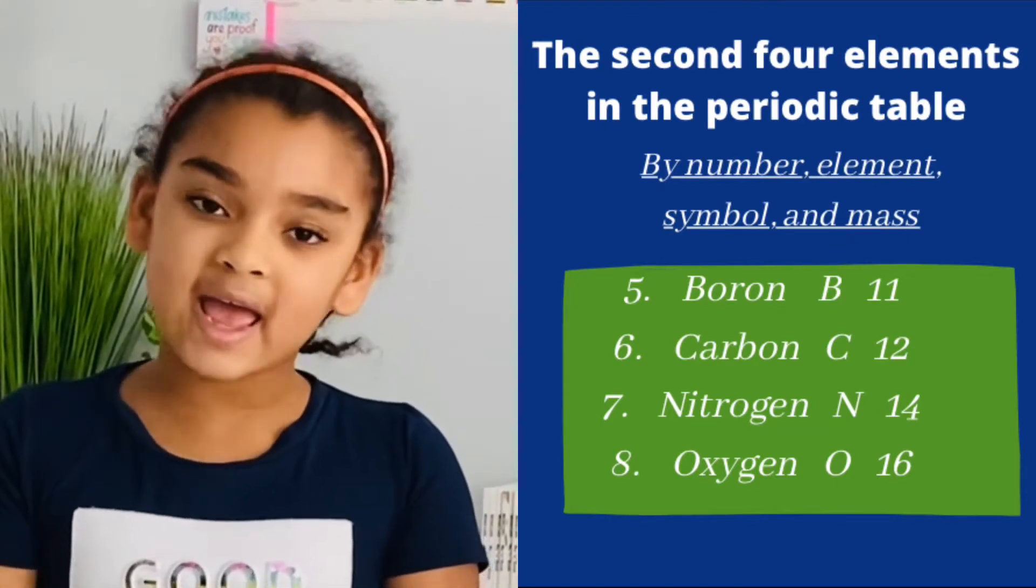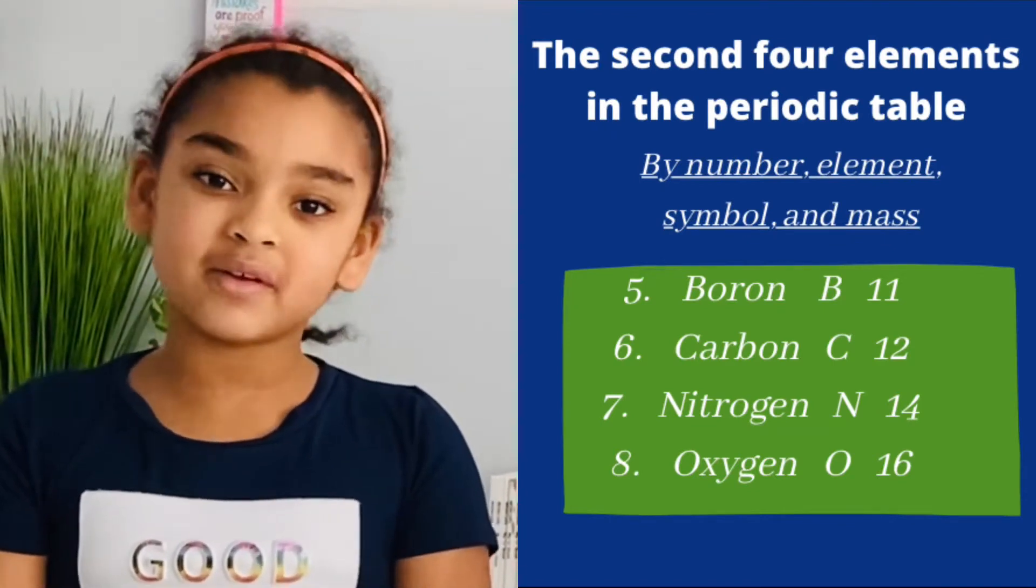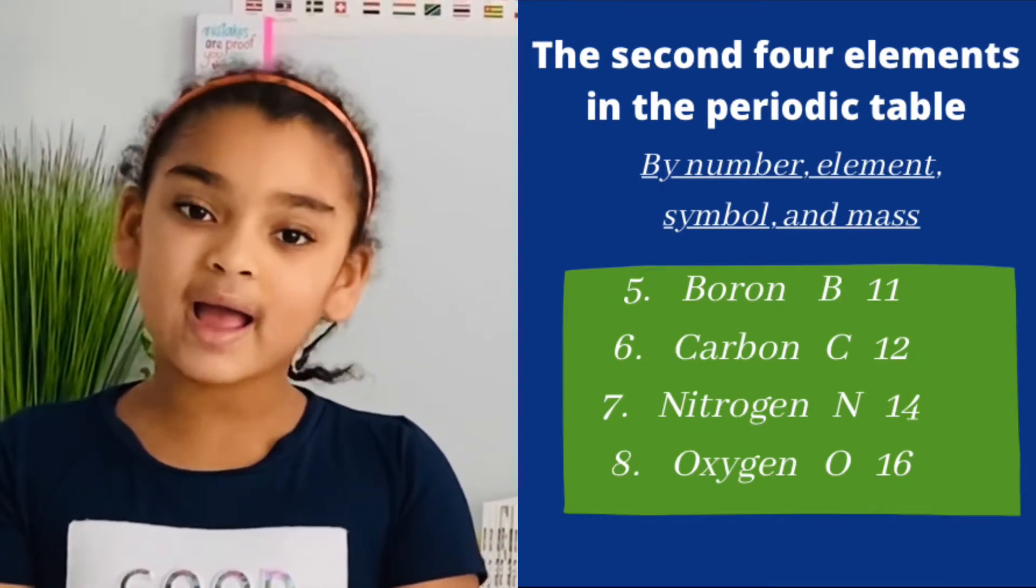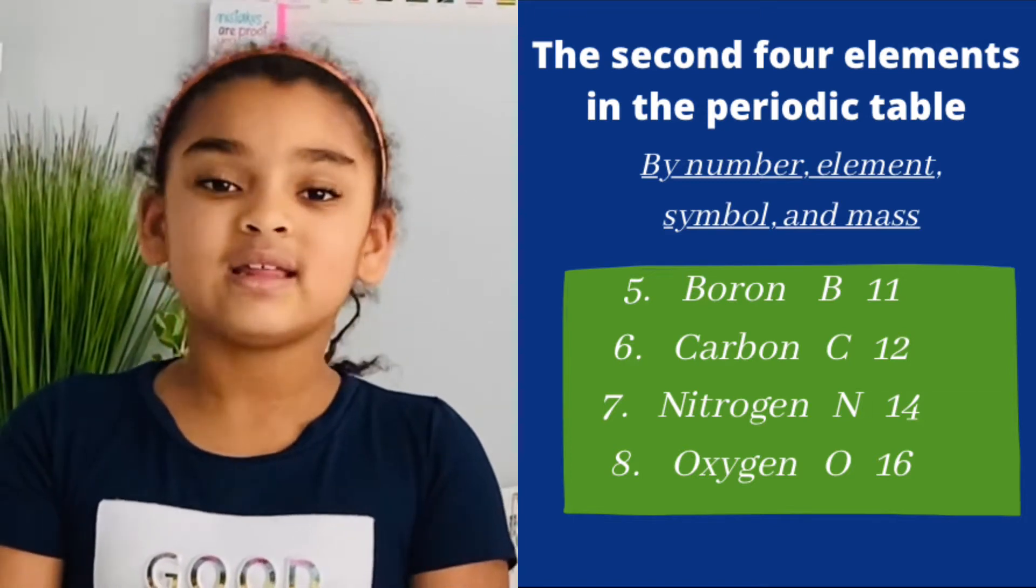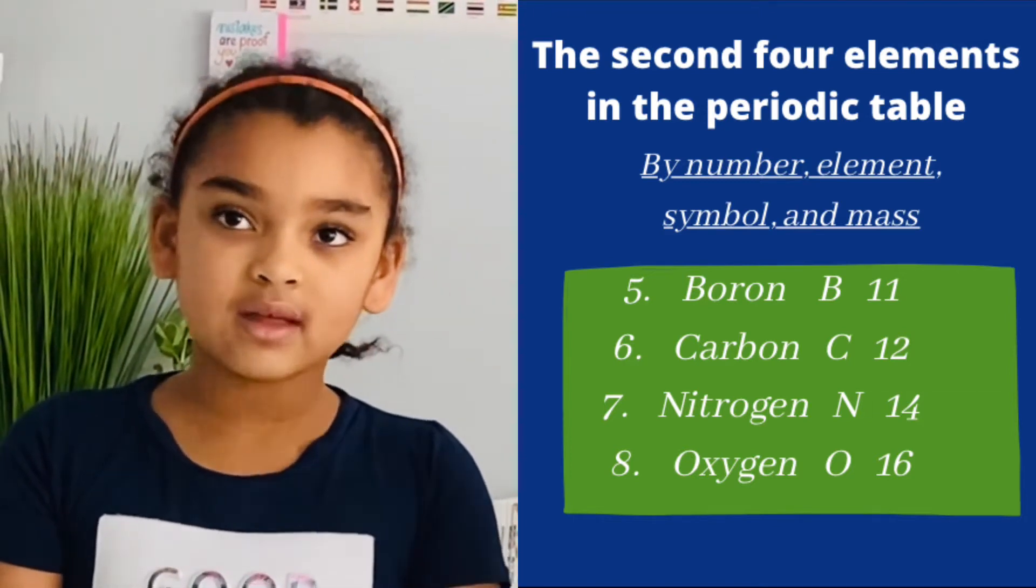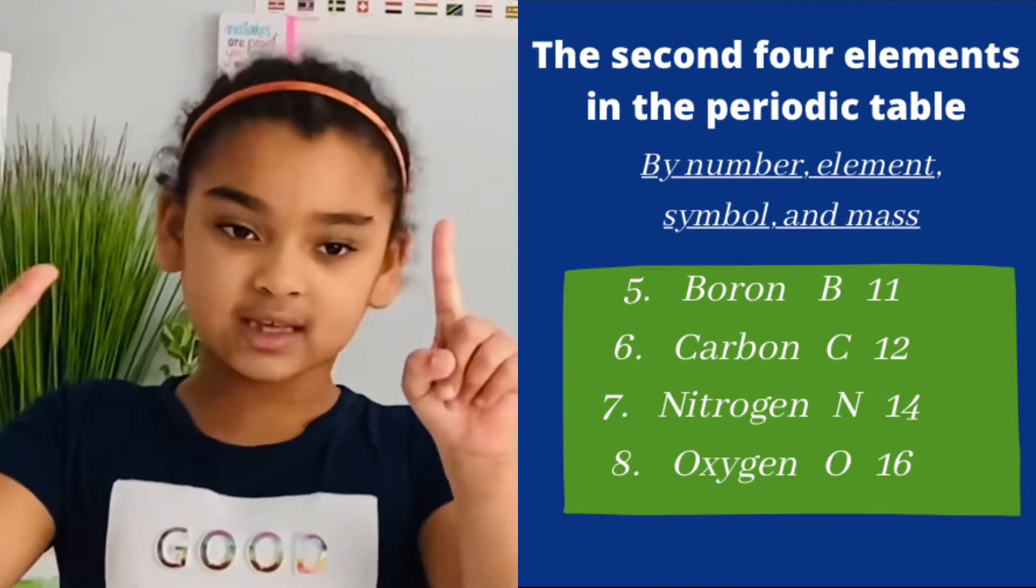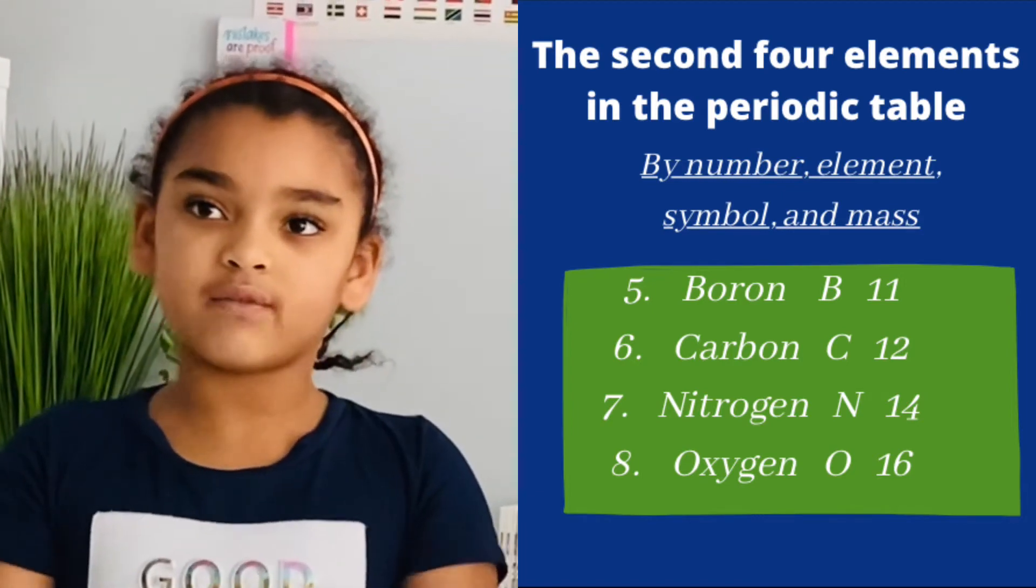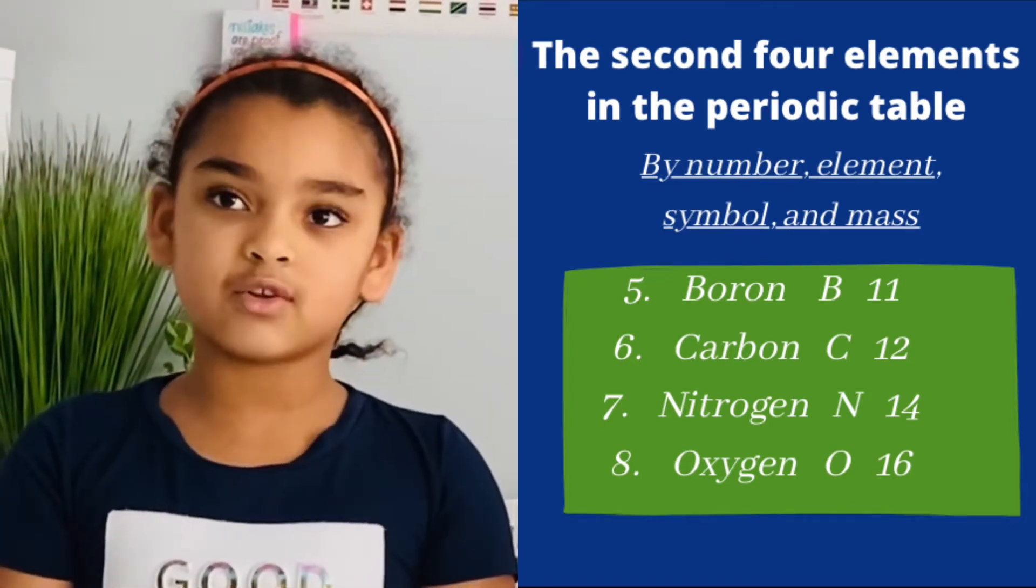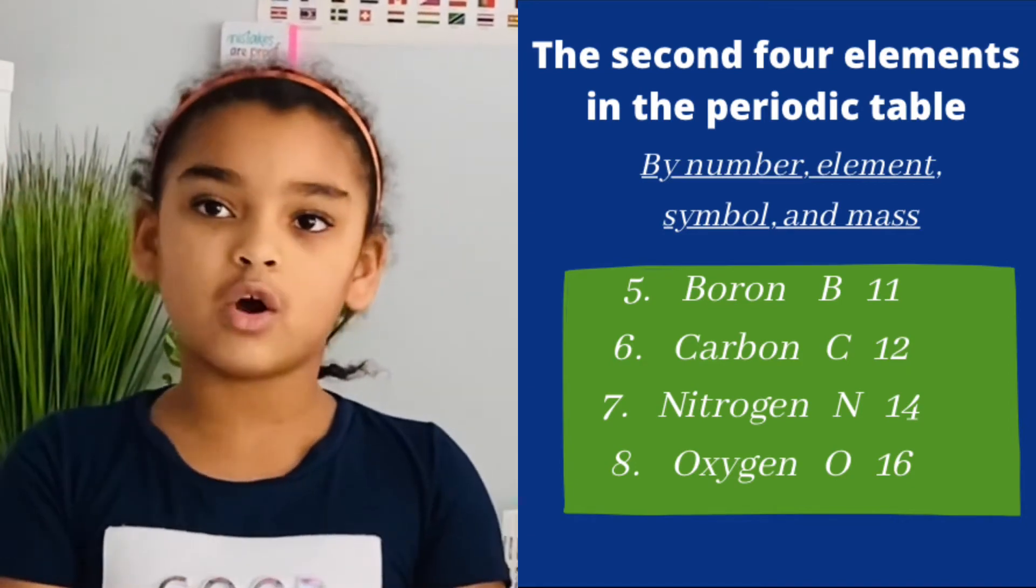What are the second four elements in the periodic table? By number, element, symbol, and mass. 5, boron, B11. 6, carbon, C12. 7, nitrogen, N14. 8, oxygen, O16.